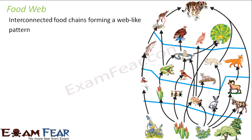Here you can see it is not a straight line at all. Different organisms eat up different other organisms. It is not that one organism can be eaten up by only one other organism. For example, how many animals can feed on plants? How many herbivores are there? There are many — a deer, a rabbit, a goat, a cow, a buffalo. So there are so many animals which can feed on plants.